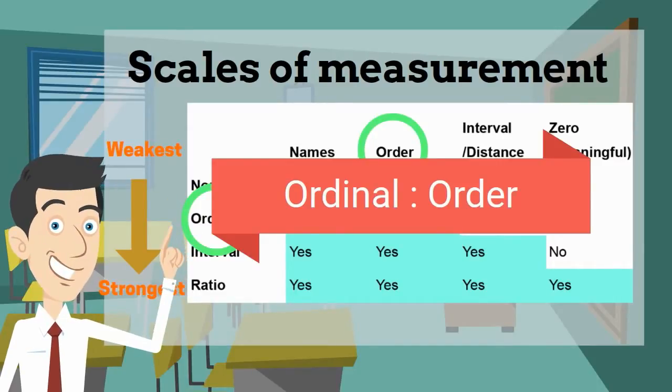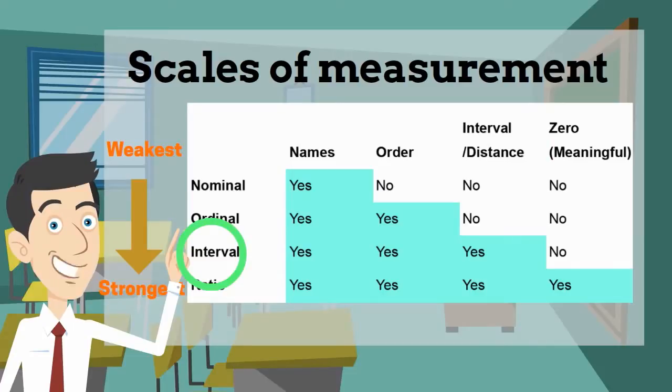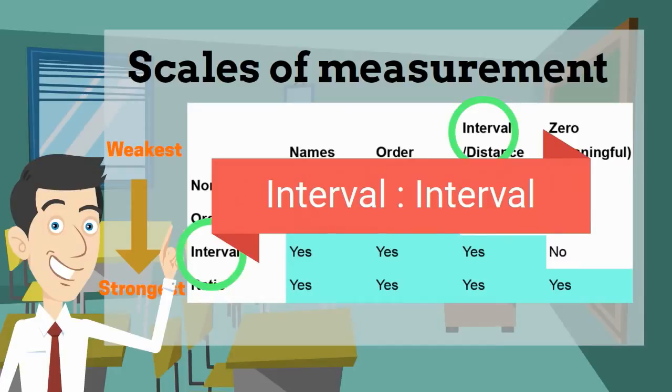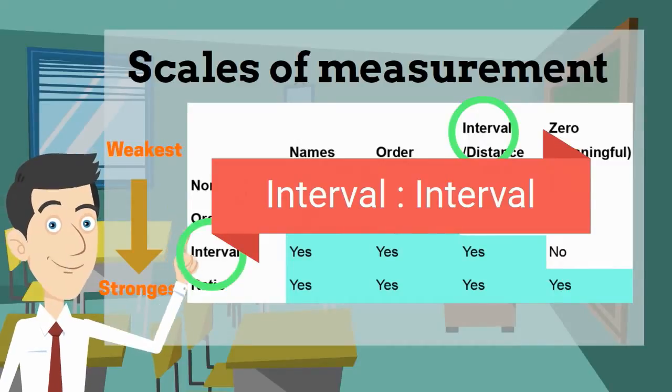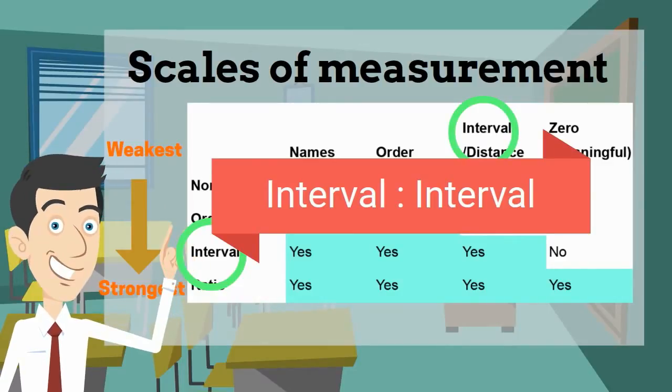Now next one down the table is interval. You can think about it by its name - it is measured by interval. A typical example of this would be temperature. 50 degrees is more than 10 degrees. You can compare: 50 degrees to 10 degrees is 40 degrees hotter than 10 degrees.